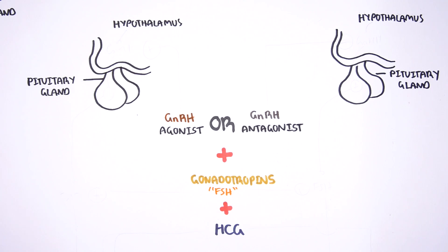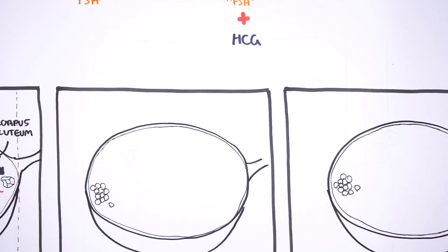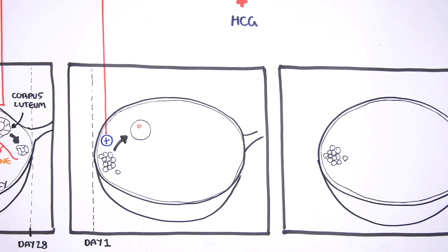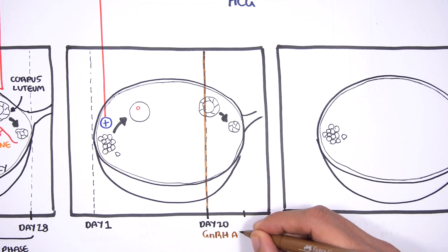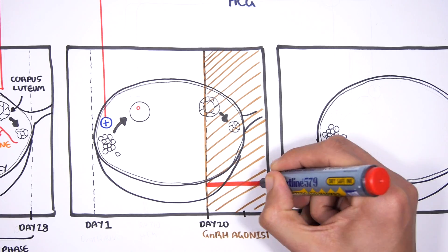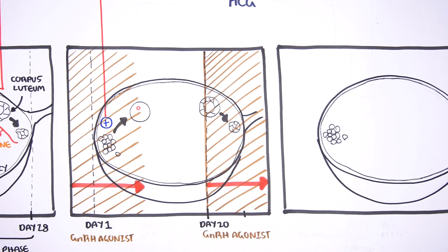Normally, as we have learned, the hypothalamus produces gonadotropin-releasing hormone at day one of the menstrual cycle, which stimulates the release of follicle-stimulating hormone from the pituitary gland, and FSH travels to the ovary to stimulate follicle development. Controlled ovarian stimulation using gonadotropin-releasing hormone agonists begins at day 20 of the previous menstrual cycle, when the corpus luteum is slowly degenerating, and is continued until day 10 of the new menstrual cycle. GnRH agonists prevent spontaneous follicle rupture due to the luteinizing hormone surge and promote follicle development.